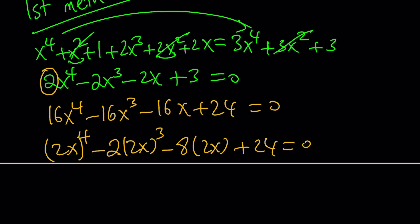I'm going to name 2x something else, like y maybe this time. You could also use t if you want. So let's call this y. And then we'll get y to the 4th minus 2y cubed minus 8y plus 24 is equal to 0.